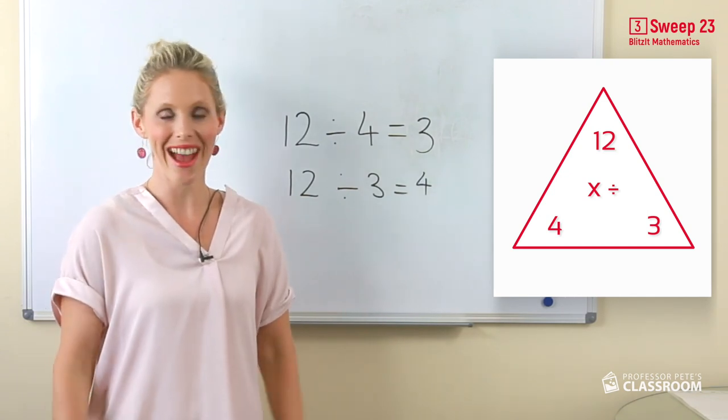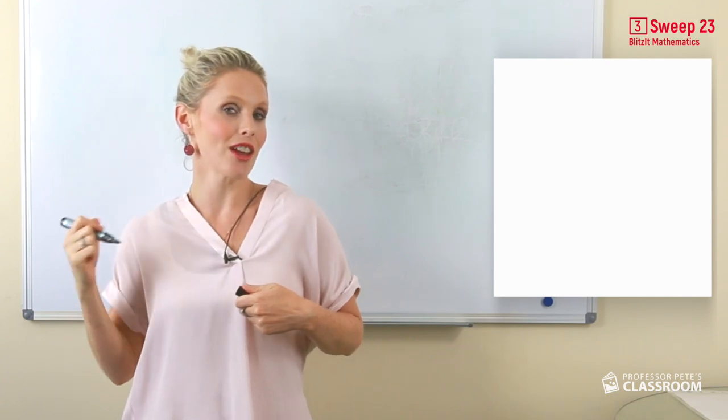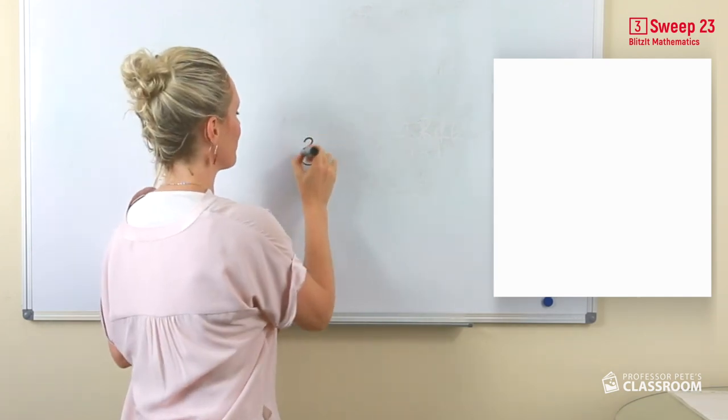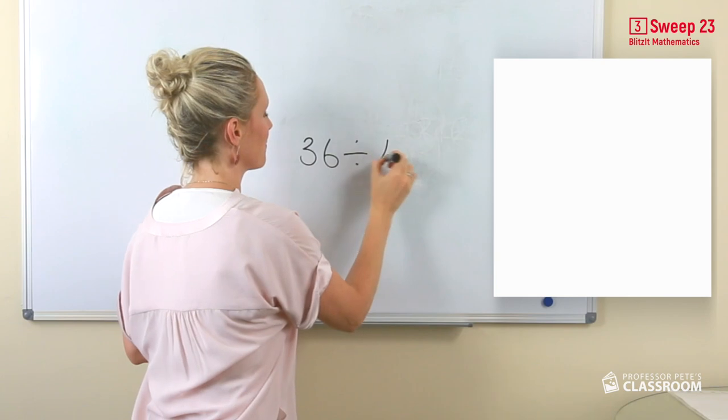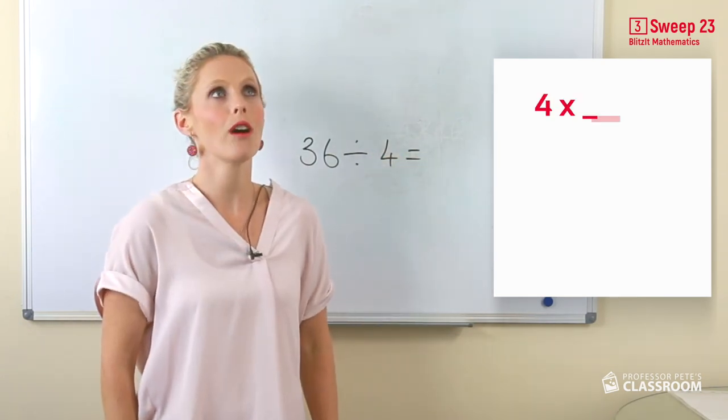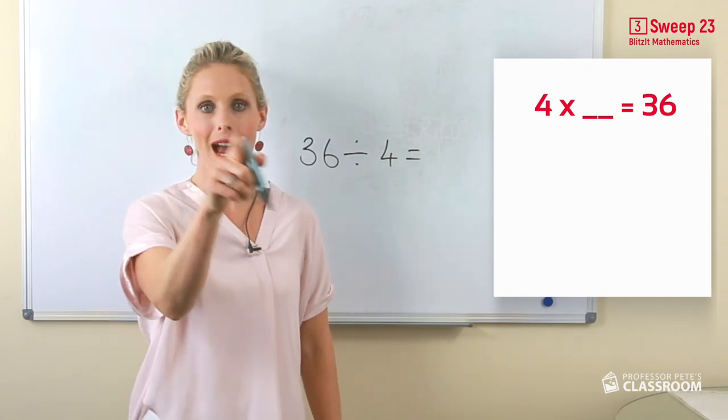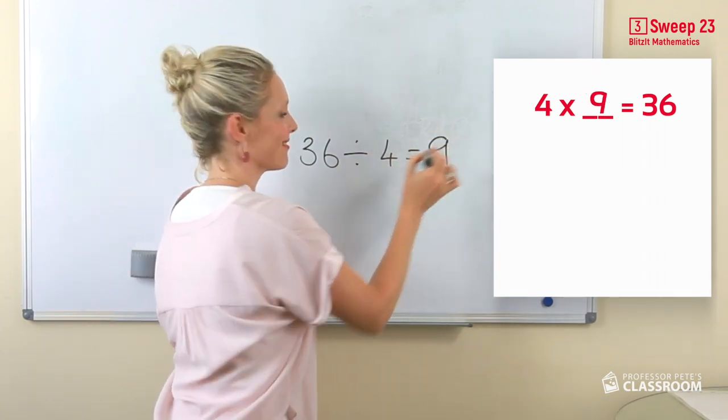It's all in the fact family. How about thirty-six divided by four? Four multiplied by what equals thirty-six? Nine.